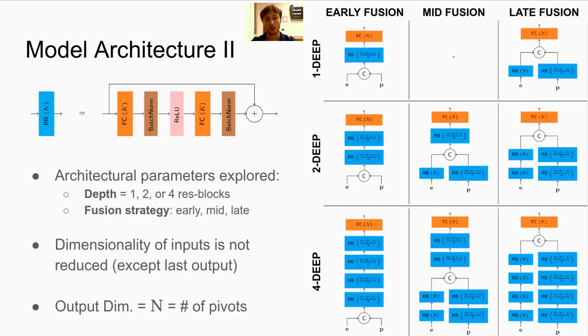Here on the right, you can see in a schematic way all the eight architectures that we tested. The C in the circle represents concatenation, and the dimensionality of the output of each block is reported in parentheses inside the block. And here N stands for the number of pivots.